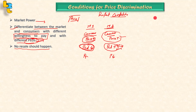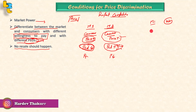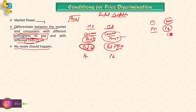The third condition is that no resale should happen — the product should not be resaleable. If there is market one and market two, and the price in one market is lower, people who bought at the lower price could resell in the higher-price market. So for price discrimination to work, resale must not be possible.